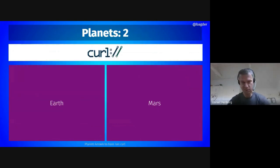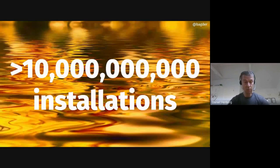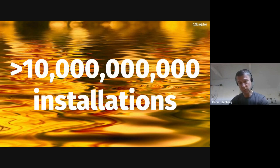Since a while ago it also runs on two planets, because curl was used in the Mars helicopter — the Ingenuity helicopter on Mars, the 2020 project. NASA has confirmed that curl was used in that project — kind of cool. All in all we count more than 10 billion installations of curl or libcurl in the world. It's a rough guess but I'd say it's actually rather low-counted, depending on how you want to count.